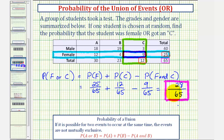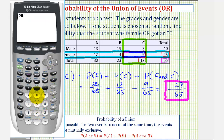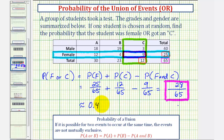Let's also express this as a decimal and a percentage. To convert to a decimal, we divide 28 by 65, rounding to four decimal places, which gives approximately 0.4308. As a percentage, this would be 43.08%.